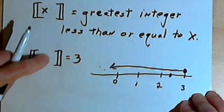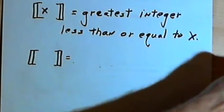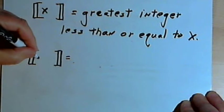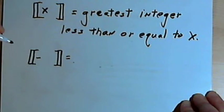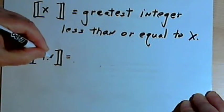Now where this gets a little bit confusing is when we get to negative numbers. So let's do an example with a negative number. Let's say I've got the greatest integer value of negative 1.6.